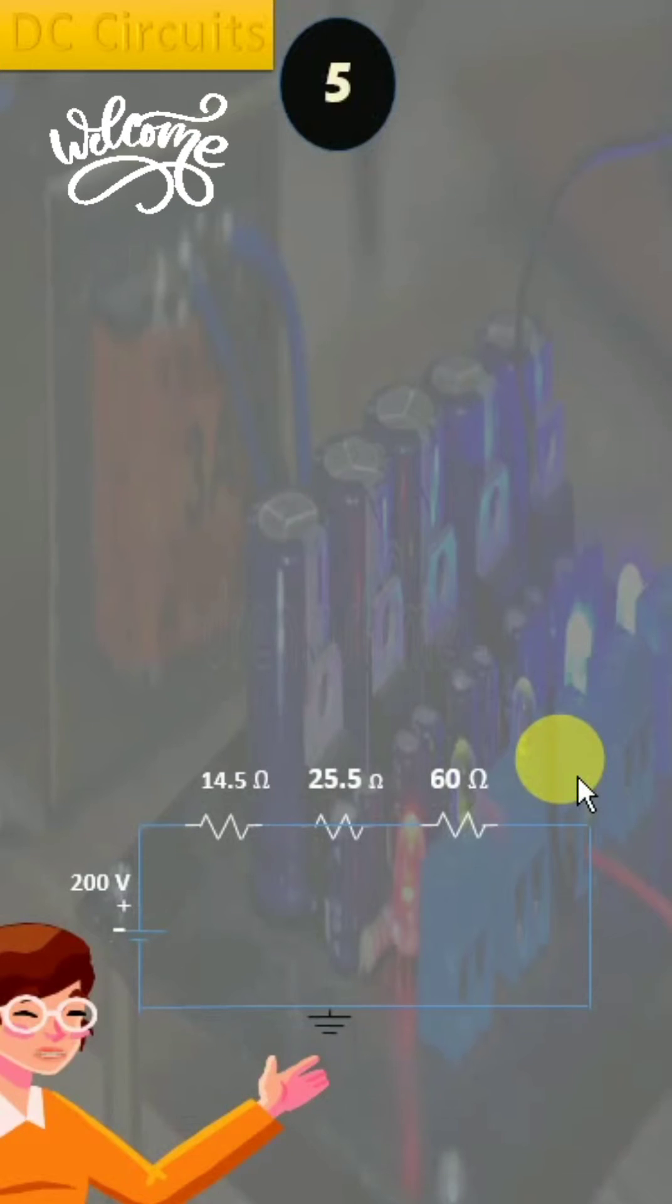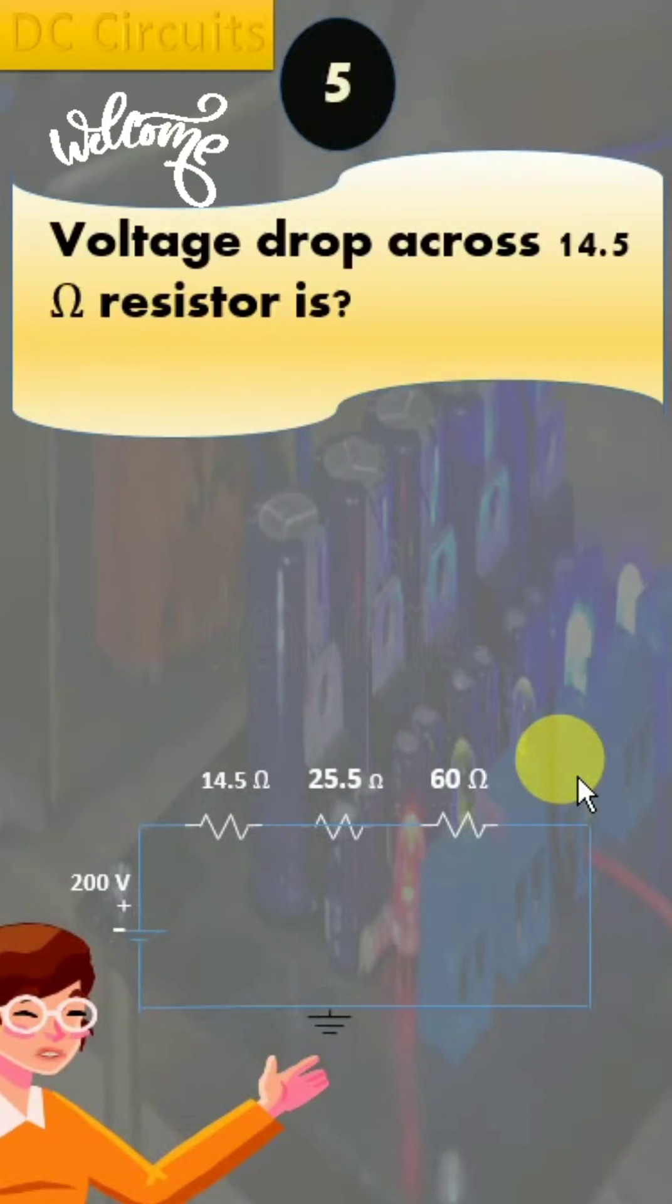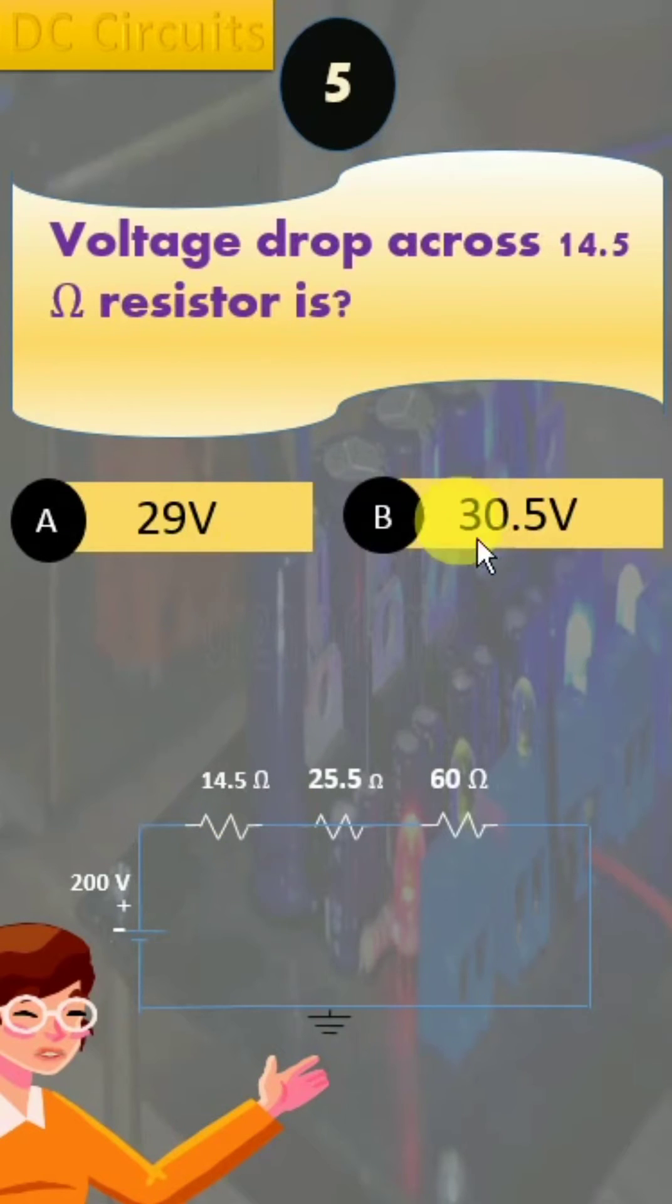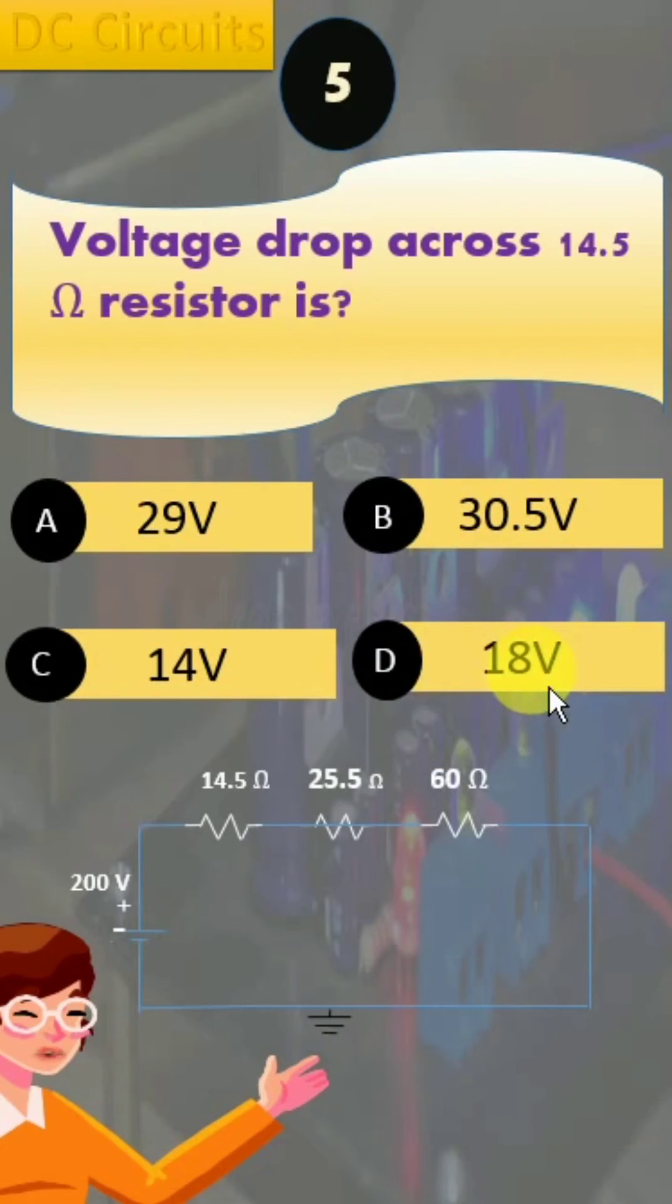In question number 5 of DC circuits, we have been given this diagram and are required to find the voltage drop across the 14.5 ohm resistor. Option A is 29 volts, B is 30.5 volts, C is 14 volts, and D is 18 volts.